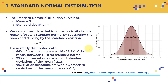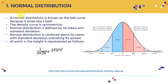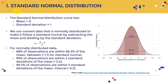The next distribution is the standard normal distribution. A standard normal distribution curve has a mean of zero and a standard deviation of one. If you've taken a statistics course or basic mathematics course, you may have already encountered this — you can take normally distributed data and convert it to a standard normal distribution.